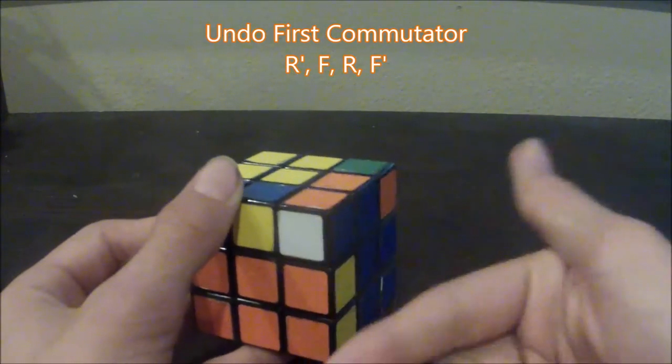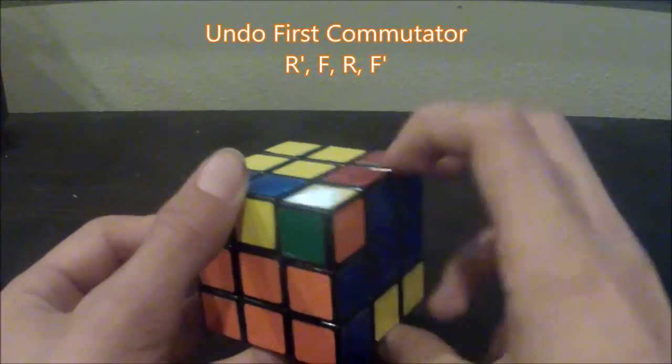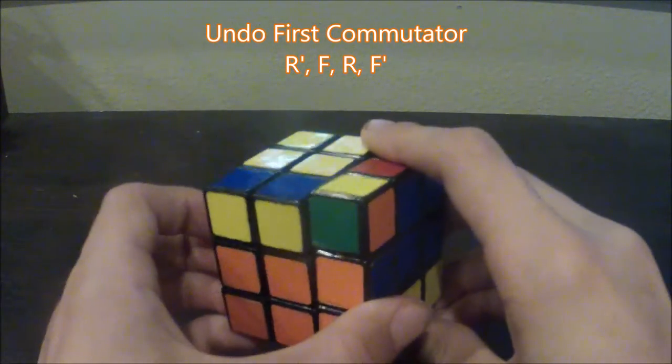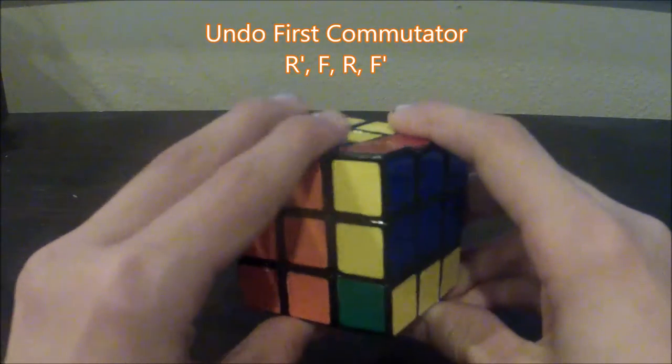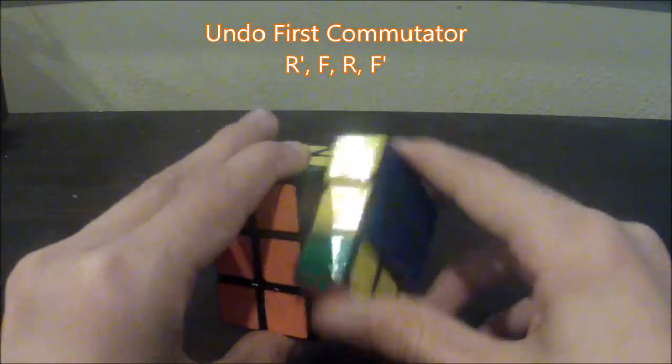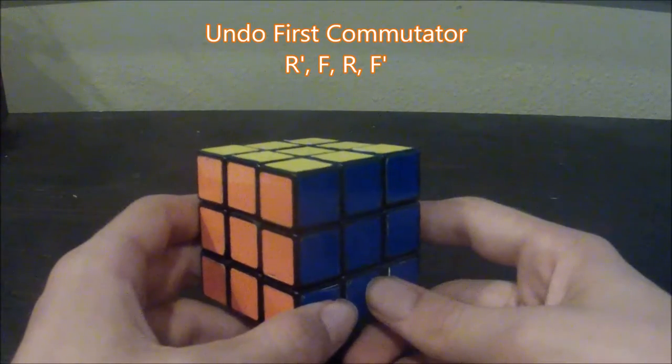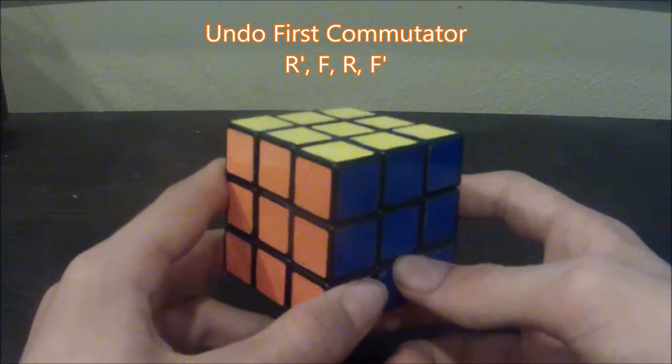This is the inverse of the commutator we already did. It's right inverted, front, right, and then front. And the cube has been brought back to a solved state.